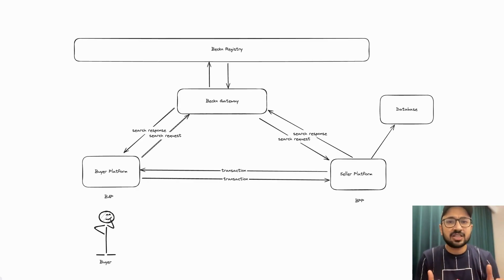Gateway is just a routing layer. It does not have a brain of its own. Gateway says, let me check with the registry on who is selling a cake nearby. Remember, everyone in the network is registered with the registry. From the registry, gateway gets the address of the platforms who are selling cakes. Gateway will send an API request to all the platforms saying a certain BAP or buyer platform is looking for a cake. Anyone interested to sell?